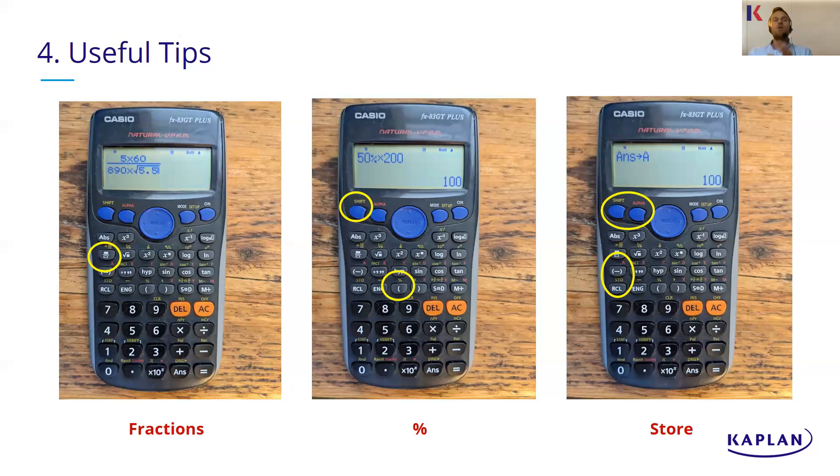So if you've got a particularly complicated set of calculations going on, you could do one bit, save it as A, do the next bit, save it as B, do the next bit, save it as C. And then at the end, you might have to do right, okay, I'm now going to do five times A plus three lots of B divided by C, and that'll give me my answer. So quite a nice thing if you are doing the more complex calculations.